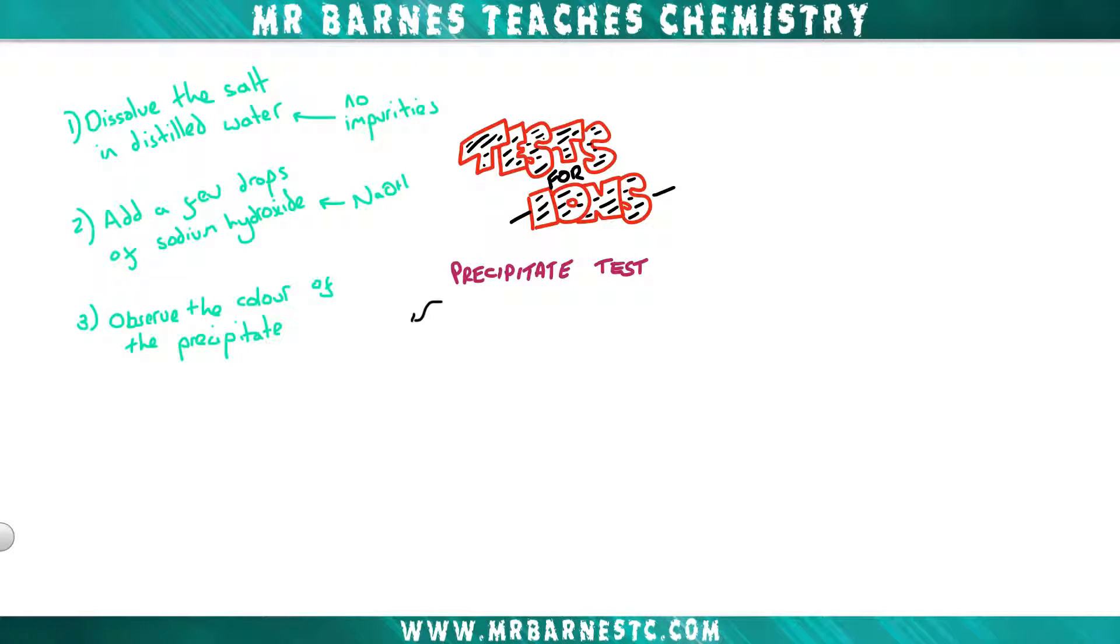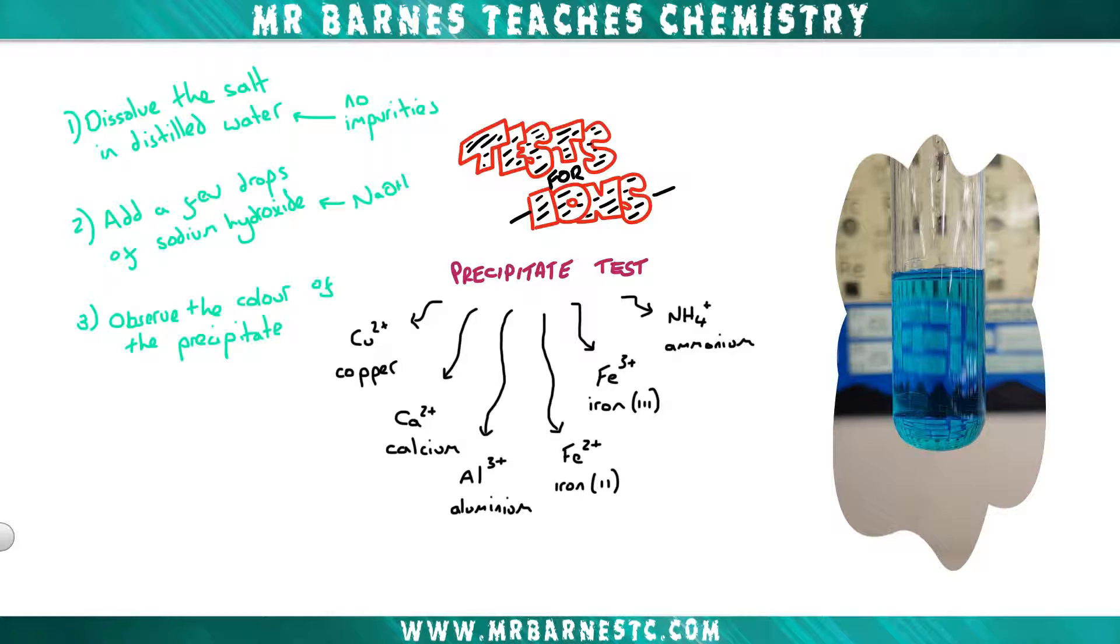Now there are six different observations you need to be able to remember. They are for copper Cu2+, calcium Ca2+, aluminium Al3+, iron Fe2+, iron Fe3+, and ammonium NH4+.